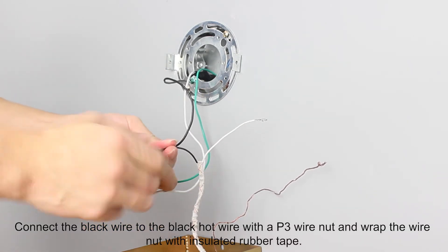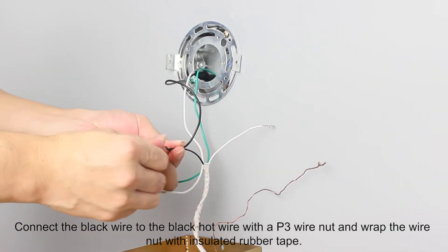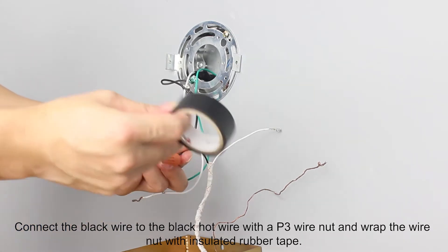Connect the black wire to the black hot wire with a P3 wire nut and wrap the wire nut with insulated rubber tape.